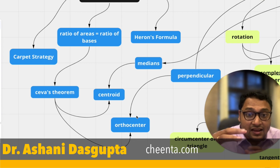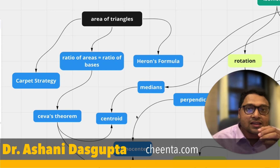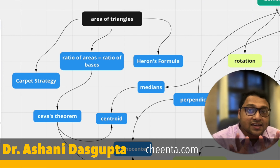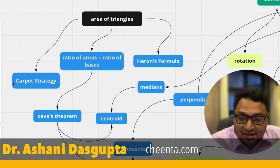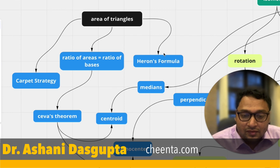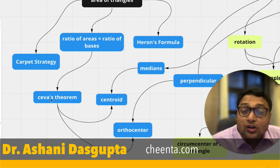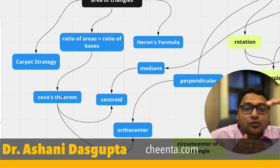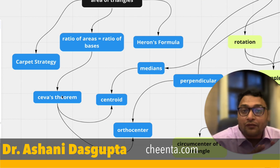All of these ideas are listed in a very curious manner — there is a hierarchy. For example, if you are studying area of triangles, you should start with three ideas: the carpet strategy, the ratio of areas equal to the ratio of bases, and Heron's formula. After you study ratio of areas equal to ratio of bases, you go to something called Ceva's theorem.